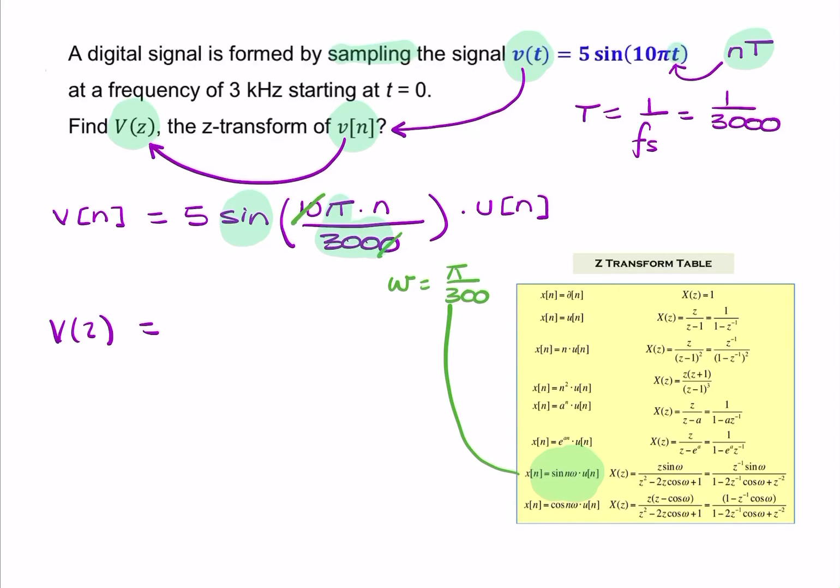Okay, so, I can now write the z-transform as this expression here. So, I'll keep the 5, so I'll say 5 times z times sine of omega, divided by z-squared minus 2z cosine omega plus 1.